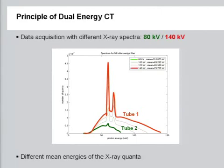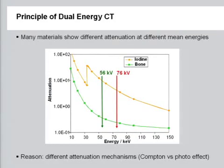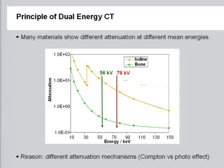If you generate two spectra using different KVP, for example 80 and 140, they have different peak energies and they also differ in their mean energy. The problem is that although the peak energy is very different, the mean energy doesn't change a lot. Many materials show different attenuation at different mean energies. There are two main effects that contribute to attenuation, and the K edge of iodine means that the attenuation coefficient of iodine increases much faster than that of bone if you reduce the energy.